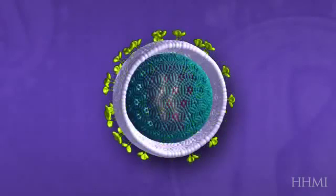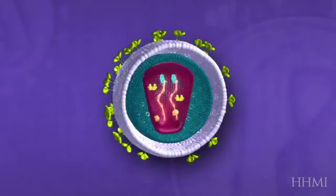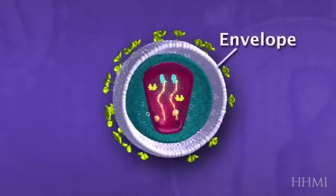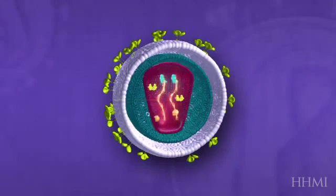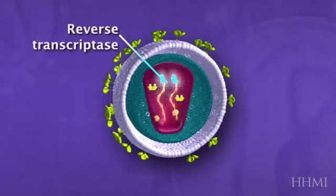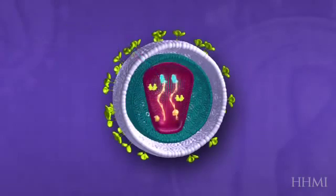This is HIV. It's a typical retrovirus, meaning that it has an outer envelope, and in the center it has two copies of RNA, as well as an enzyme here in blue that's reverse transcriptase, which will ultimately turn that RNA into DNA.